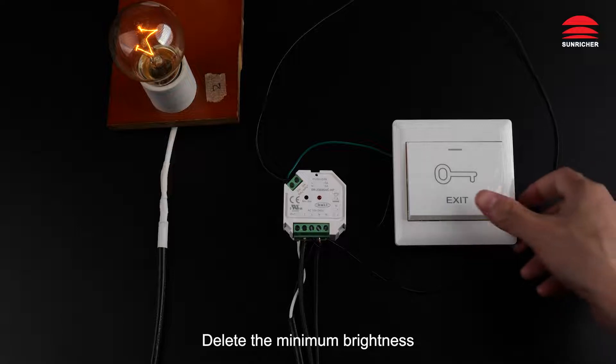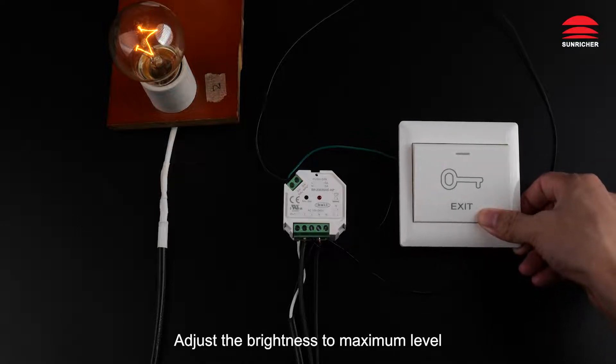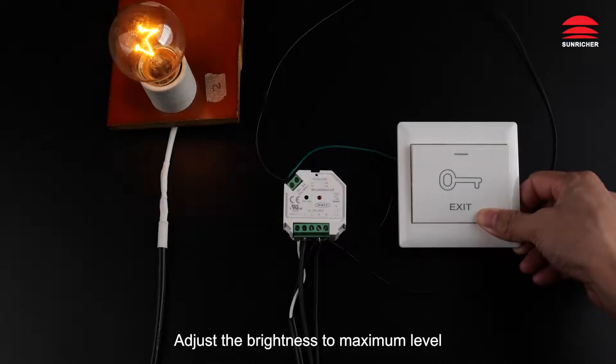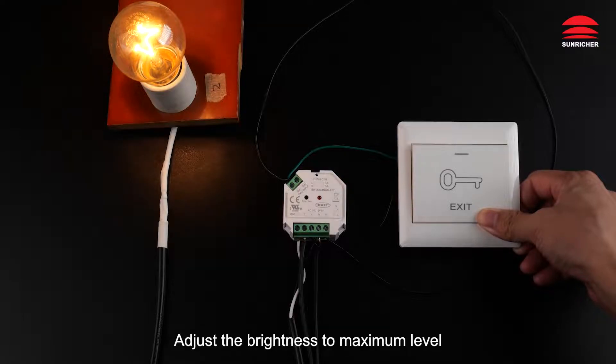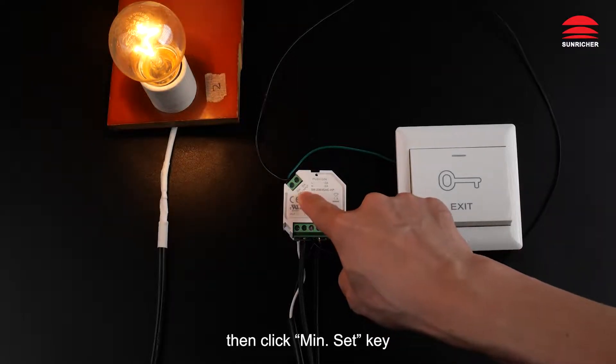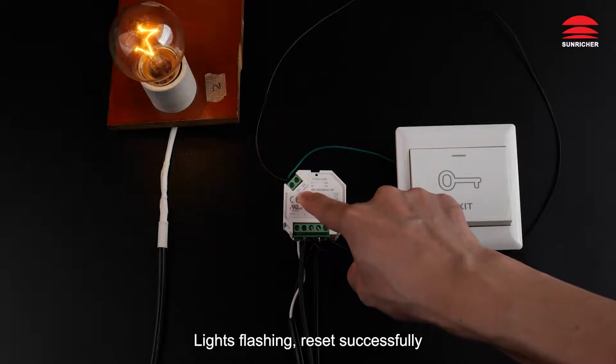Delete the minimum brightness: adjust the brightness to maximum level, then click min set key. Lights flashing indicates reset successfully.